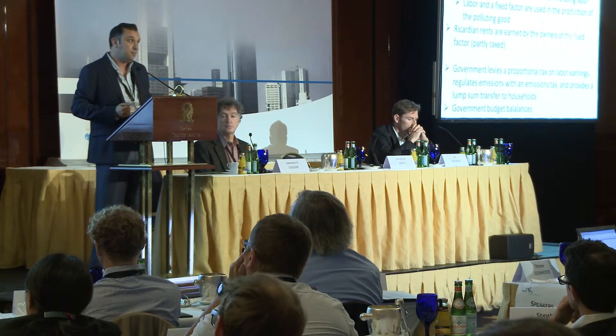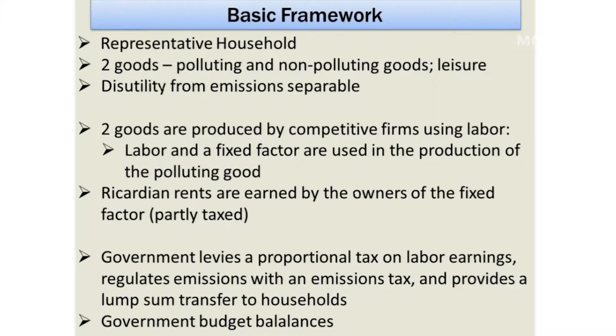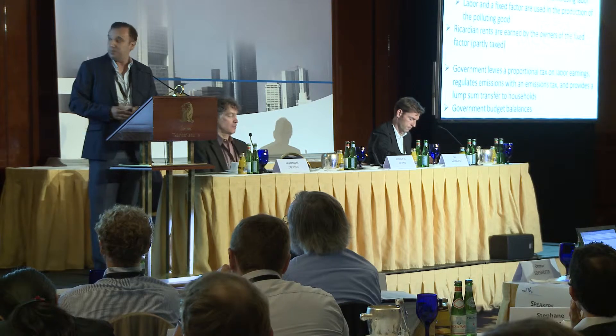The tax system is suboptimal to begin with, partly because it fails to fully tax rents. The government levies a proportional income tax, also taxes emissions to correct for the environmental externality, and provides lump sum transfers to households. Like the prior two papers, we also assume that the government budget balances. This is a very simple static model.